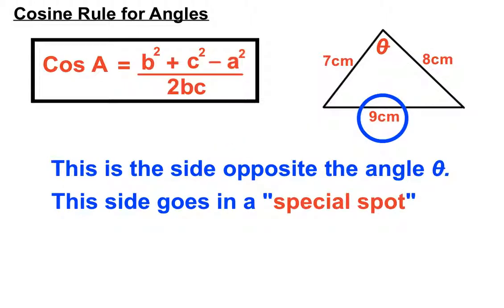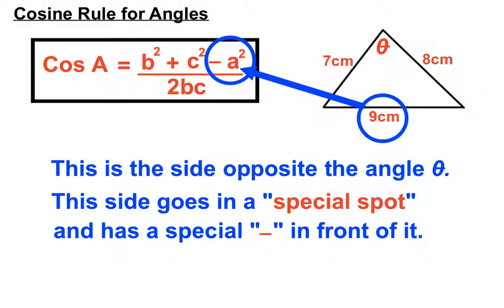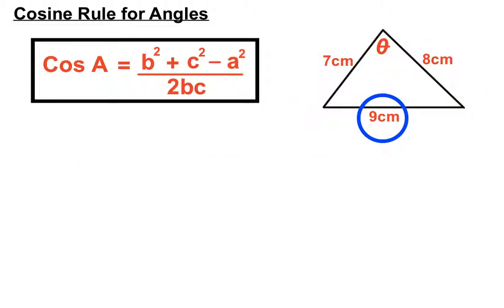It's the side opposite the θ. The side goes in a special spot up there where the minus is into the formula. I'm highlighting this because this is probably the crucial bit of the whole substitution process, knowing which side to put where. That's the one that's going to have the minus in front of it when I do the substitution. We'll keep that ring around that 9.